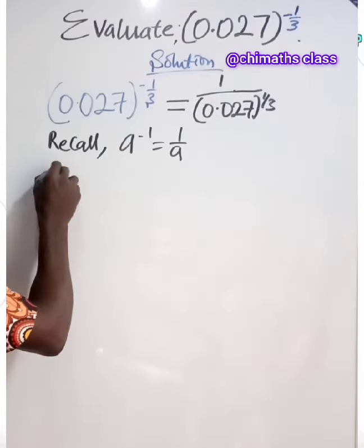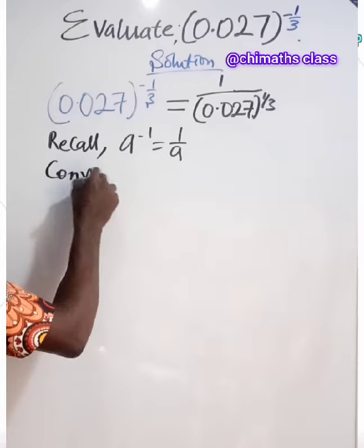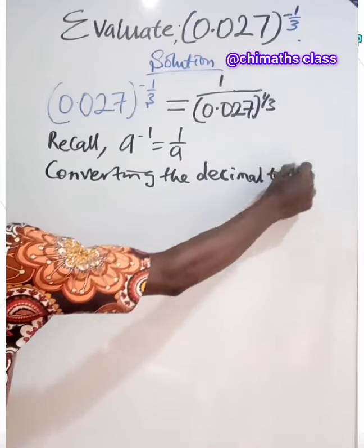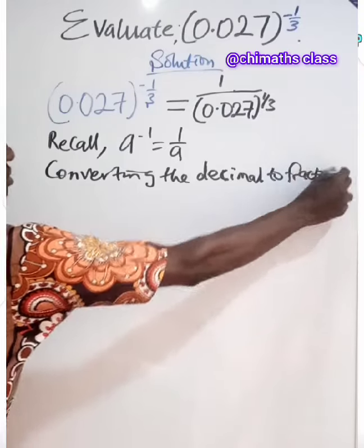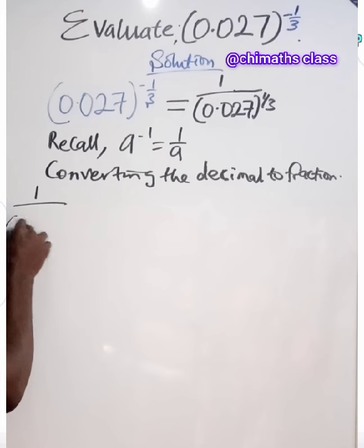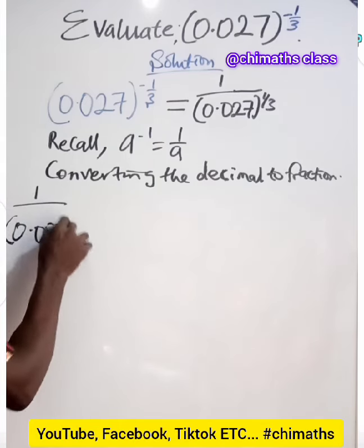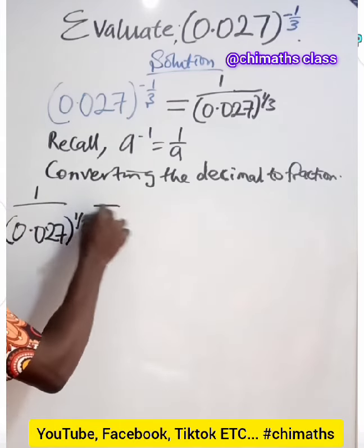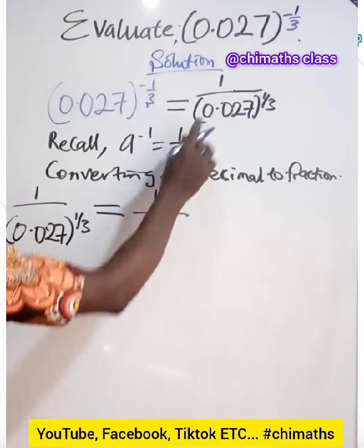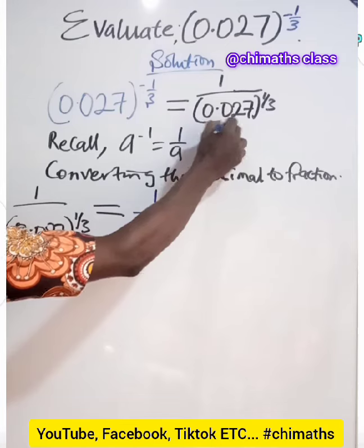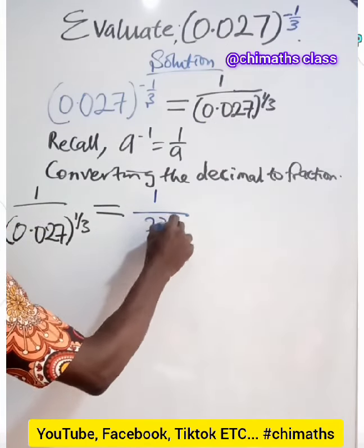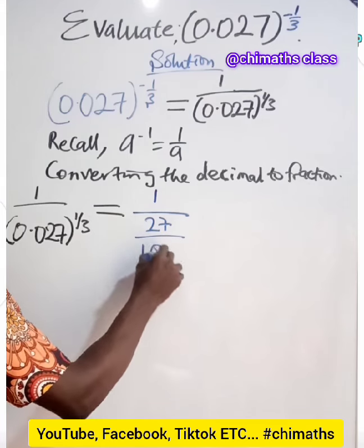Compare now the decimal to fraction. So let's compare the decimal to fraction. We have 1 over, this is decimal. So we'll put 1 here and others will be 0. Are you getting it? So we have 27 all divided by 1,000.